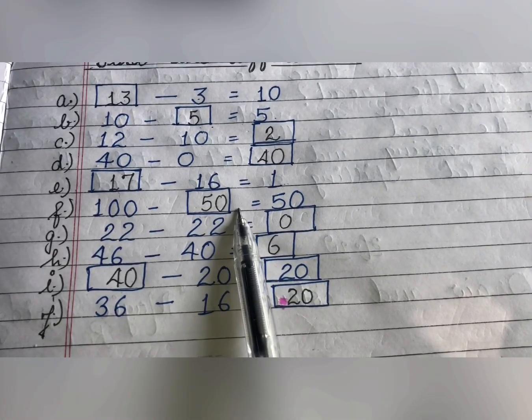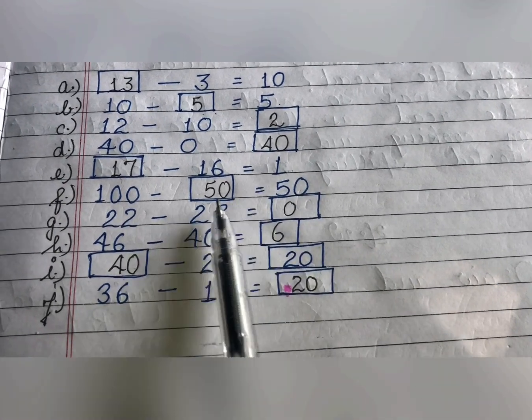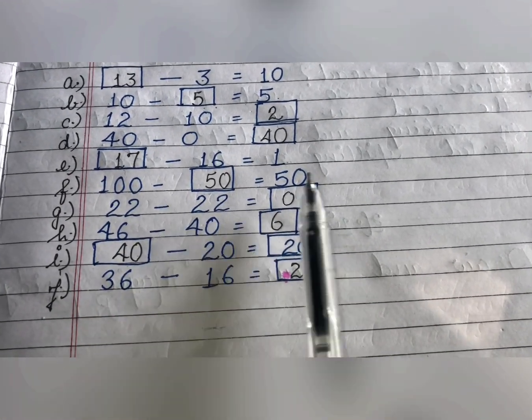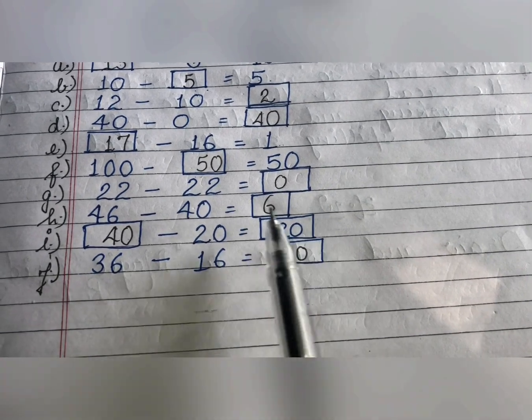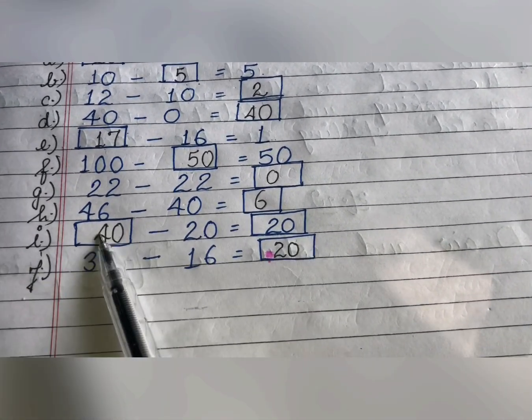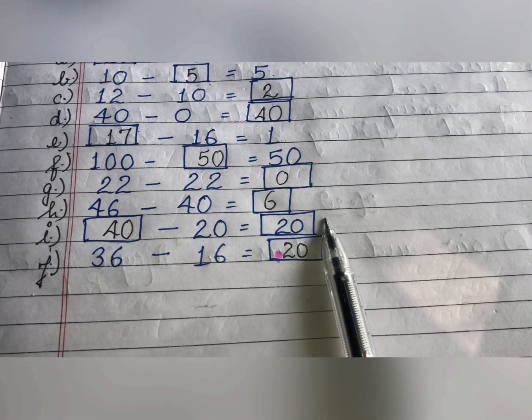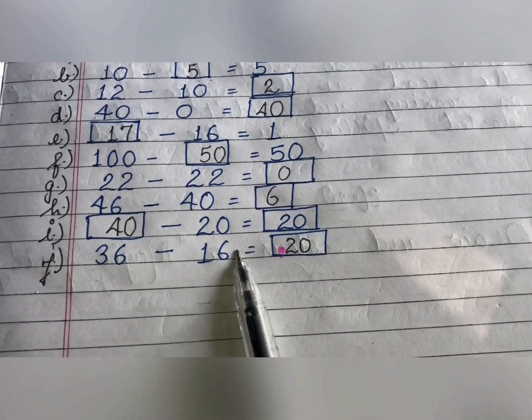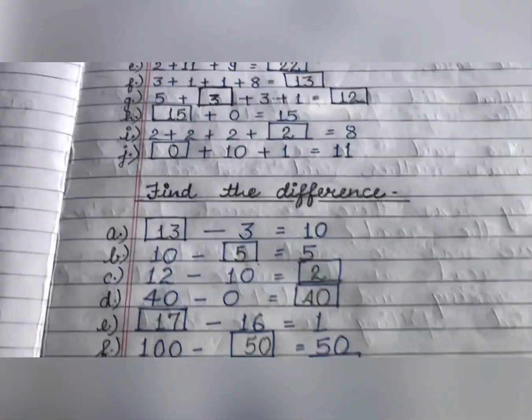100 minus which number to get 50? 50. 22 minus 22, 0. 46 minus 40, 6. Which number do you subtract 20 from to get 20? If you subtract 20 from 40 you get 20. Now 36 minus 16 is equal to 20.